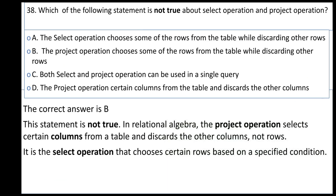In relational algebra, the project operation selects certain columns from the table, not certain rows. It discards other columns. The statement about rows is incorrect for the project operation.